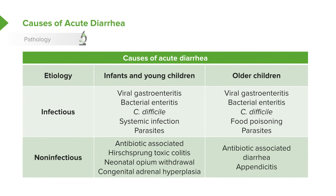Hirschsprung toxic colitis is an unusual but important condition to know about. Patients with Hirschsprung's disease have a lack of ganglions in their rectal muscular tissue, which causes them to be tonically constricted and get constipation. However, if these patients get an acute viral or bacterial gastroenteritis, they can get very, very sick because the diarrhea has a hard time getting out, bacteria can invade the intestinal wall, and these patients can go into shock.